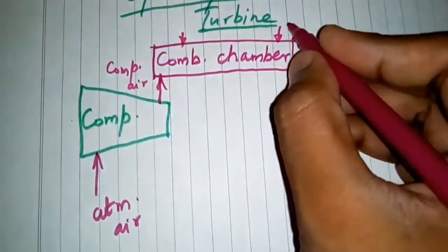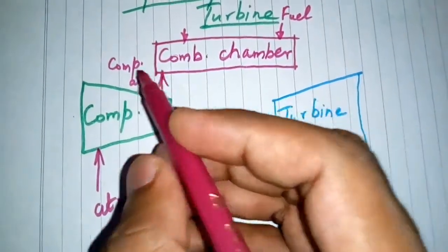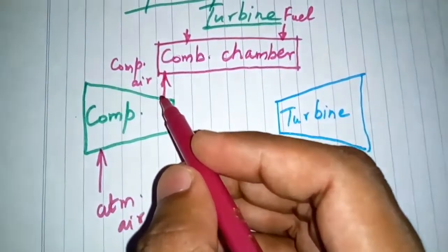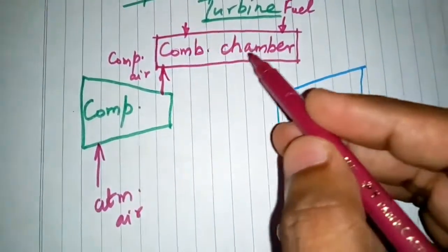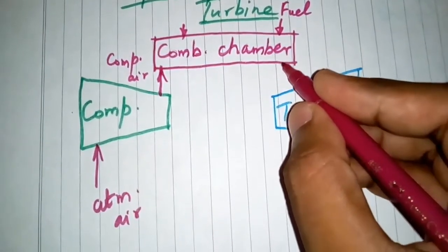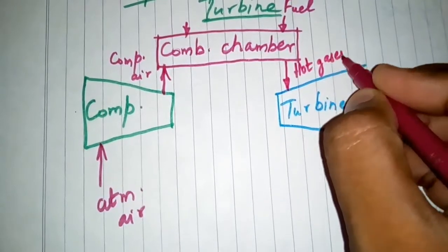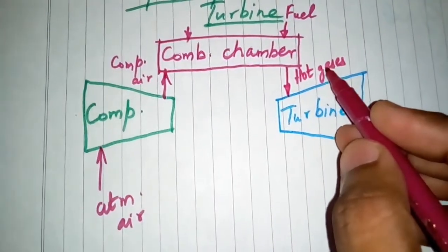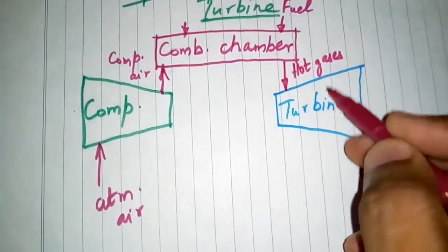Fuel is supplied to the combustion chamber, which is ignited with the help of the oxygen present in the compressed air. The internal energy of the hot gas is increased during combustion and is converted into kinetic energy with the help of a nozzle. The high-velocity jet of hot gases is made to strike the blades of the turbine rotor.